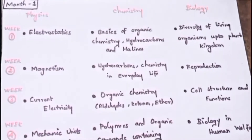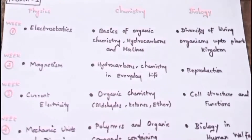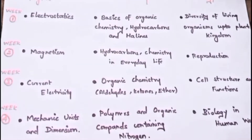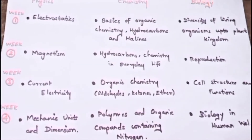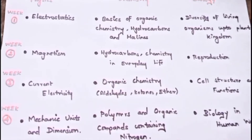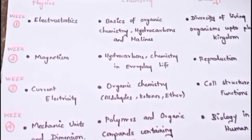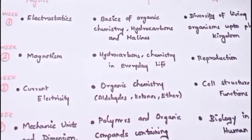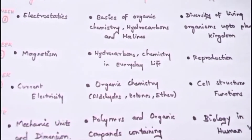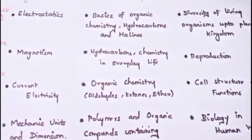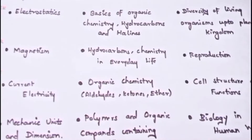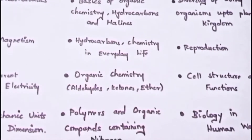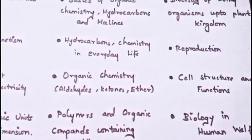First week: in Physics, Electrostatics. In Chemistry, Basics of Organic Chemistry, Hydrocarbons and Haloalkanes. In Biology, Diversity of Living Organisms up to Plant Kingdom. We can't cover the whole Plant Kingdom and Animal Kingdom in one week, so we have to split it into two. We can study the Animal Kingdom in the upcoming weeks.